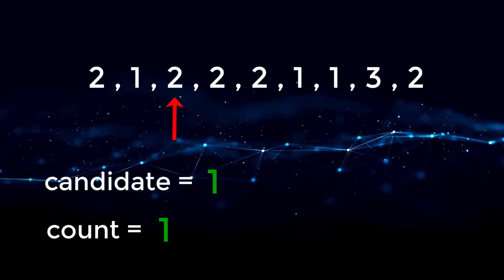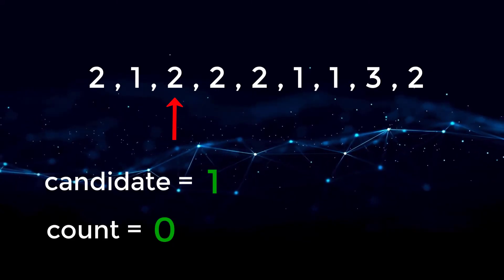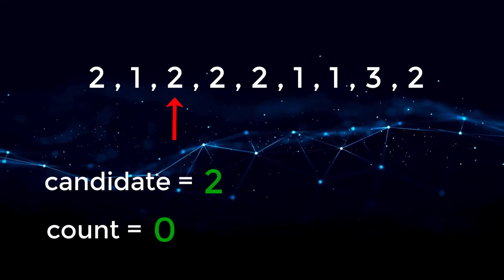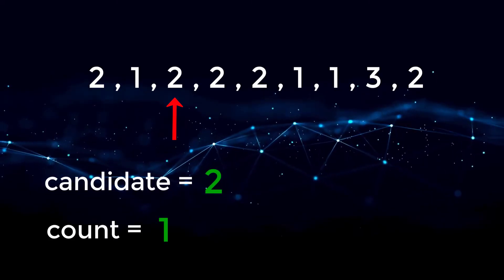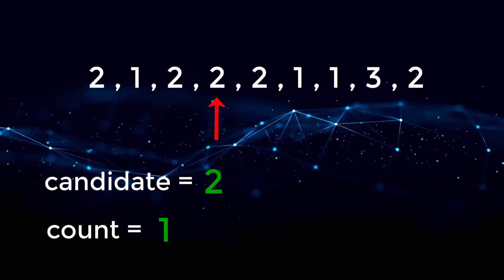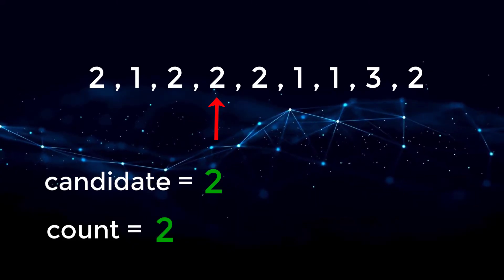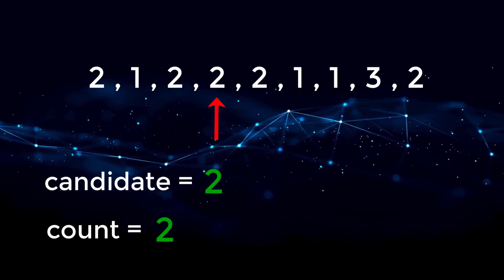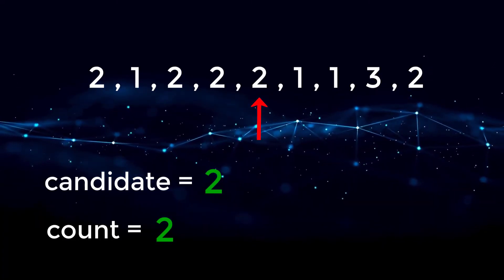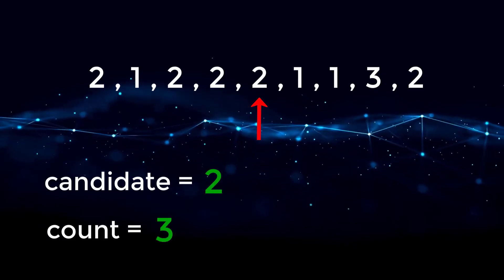Since count is zero, we take the new candidate — candidate becomes two and count becomes one. We move to the next position and two is equal to two, so we increase our count. Candidate is still two and count becomes two. We move right one more time — two is again equal to two, so we increase count. Count is now three.